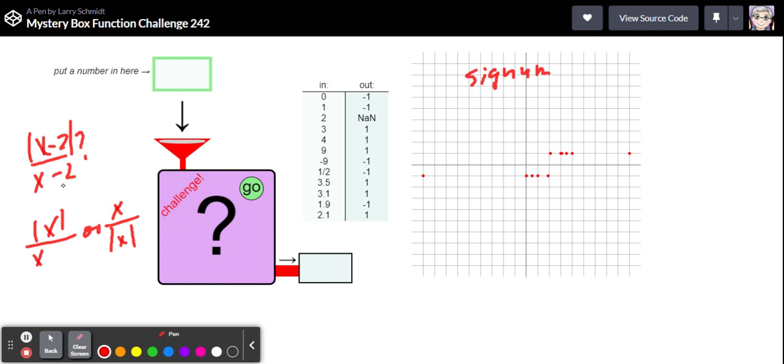Let's make sure this actually works. Let's put in a one here. One minus two, absolute value of one minus two is one. One minus two is negative one on the bottom. So if I put in one I should get a negative one and that's what I got.